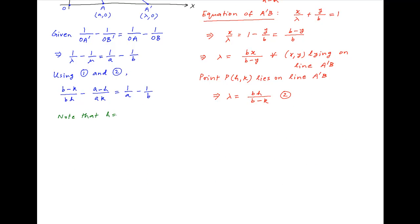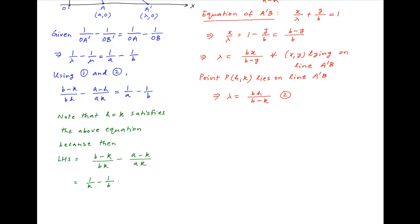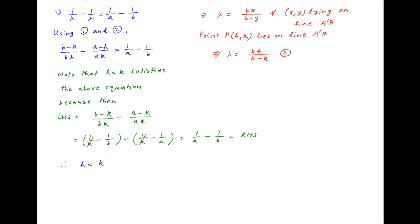Now note that H equals K satisfies the above equation. Because when H equals K, the left-hand side becomes (B minus K)/(BK) minus (A minus K)/(AK), which can be written as 1/K minus 1/B minus (1/K minus 1/A). The 1/K terms cancel and we are left with 1/A minus 1/B, which equals the right-hand side. Therefore H equals K is a solution of the above equation.